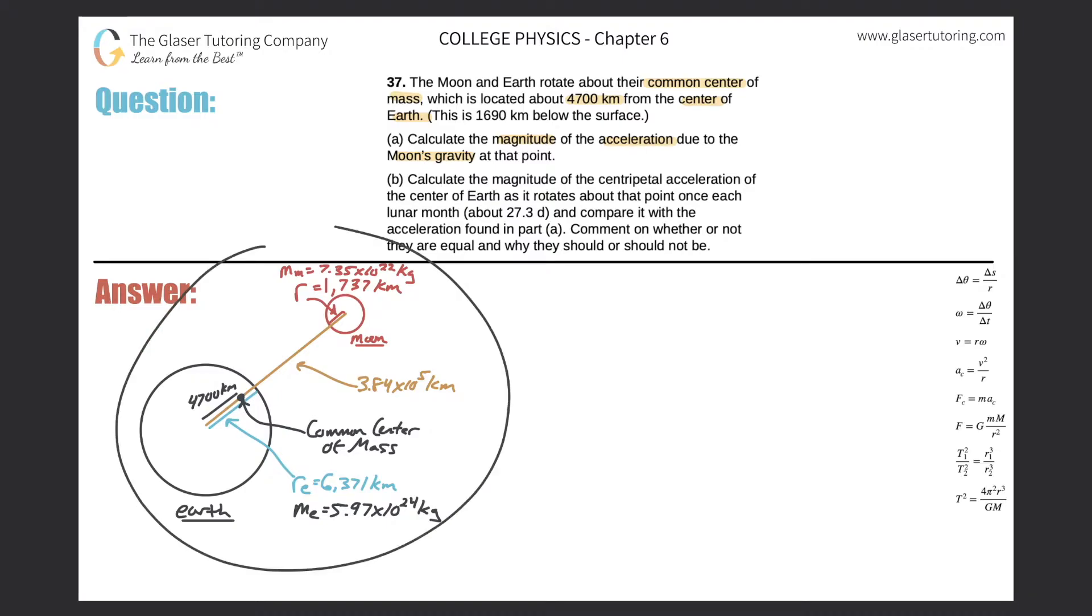Alright, so here's a nice complex picture. There's a lot of stuff going on. So first things first, black is the earth, red is the moon. They have a common center of mass between the two. So between the center of the earth and the center of the moon, the common center of mass is going to be located right here, as the problem is mentioning.